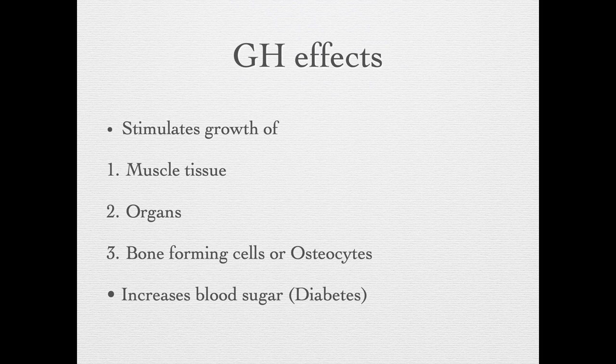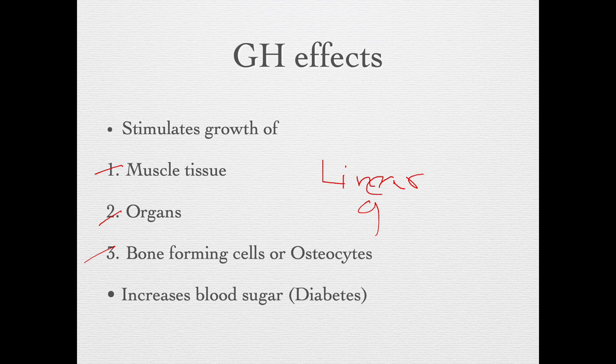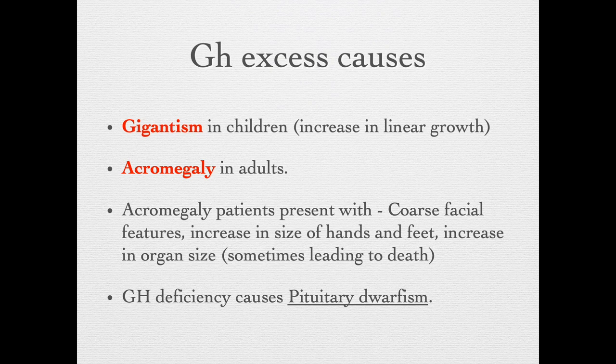The growth hormone stimulates the growth of muscle tissue, organs, and bone-forming cells or osteocytes, together increasing the linear growth of a person. A second effect of growth hormone is that it can increase blood sugar and can cause diabetes.